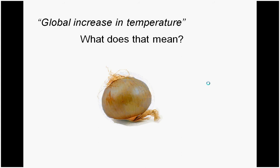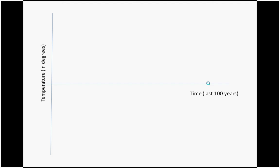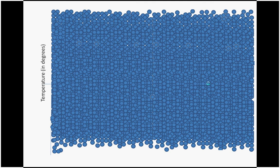Let me start with the first layer of the onion, which talks about global increase in temperature. The concept is complicated, because it requires measuring or estimating temperatures for every point on the globe, spread out through all the seasonal and yearly variations, and then looking at these values over centuries. It's a lot of data — data that is not perfect, because there are lots of gaps and guesses.